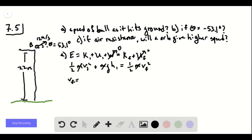And so the final speed is the square root of the initial speed squared plus 2 g h, where h is the initial height, 22 meters. And so this works out to be 24 meters per second.